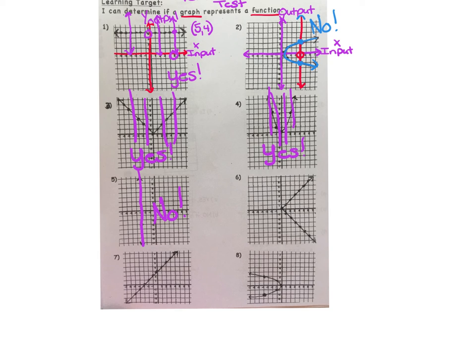The same is true for number 6. If you drop a vertical line through the given graph, it strikes it in two places, meaning there are two output values for the one input value. So no, this is not a function.